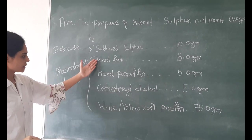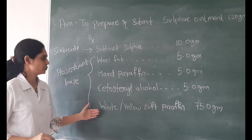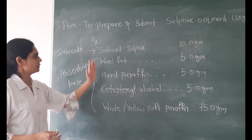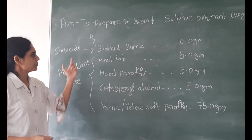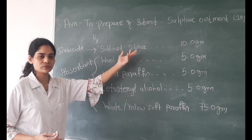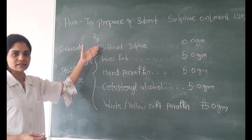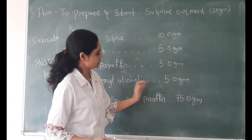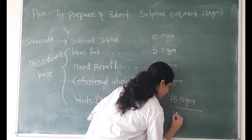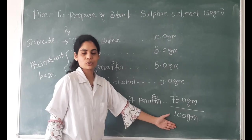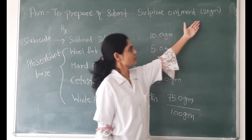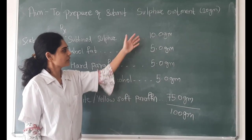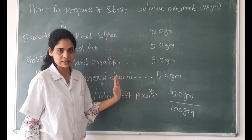We are going to prepare a base and into it we are going to add the sulphur. Since sublime sulphur is the drug, we can say scabicide is the category for this ointment. This total formula is given for the preparation of 100 grams of sulphur ointment, but we are going to produce only 20 grams. So now we will have to calculate what amount of each ingredient we will require for 20 grams.